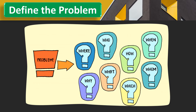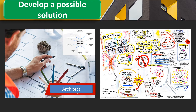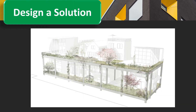Architects, just like engineers, define the problem before planning. They have to ask questions such as: What is the building for? Who is going to use it? Where is it going to be built? Among any other questions. Once the problem has been identified, the architects will start designing to develop a possible solution to the problem.